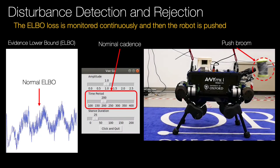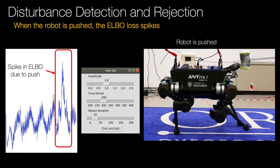Since we are using a generative model in our approach, we can characterise disturbances as out of the distribution seen during training. To measure this, we use the evidence lower bound, which is recorded as the VAE planner is operating. Any disturbance of the robot will cause a spike in the ELBO. The VAE planner subsequently increases the robot's cadence as an automatic response to the disturbance. Please note the push broom in the upper right hand corner of the robot image. The robot has now been pushed by the push broom quite severely, which has caused the ELBO to spike above a predetermined threshold.